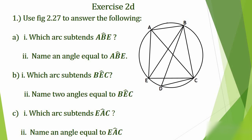The first question says: use figure 2.27 to answer the following questions. Question 1A1 asks which arc subtends angle ABE, and the second part asks us to name an angle equal to angle ABE. Let's move over to a Microsoft whiteboard to see how we can answer this question.